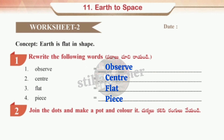Worksheet 2 has three questions to answer. Question two: How do you say that the earth appears flat? Answer: Walking over the surface of the earth feels like we are walking on a flat surface; hence the earth appeared flat.